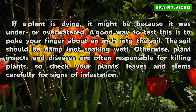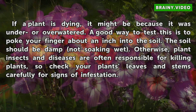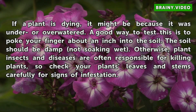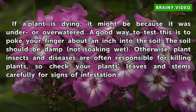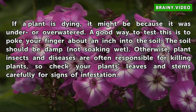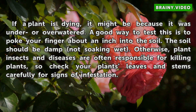If a plant is dying, it might be because it was under or over-watered. A good way to test this is to poke your finger about an inch into the soil. The soil should be damp, not soaking wet. Otherwise, plant insects and diseases are often responsible for killing plants, so check your plants' leaves and stems carefully for signs of infestation.